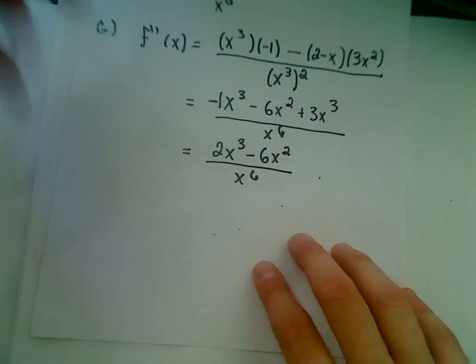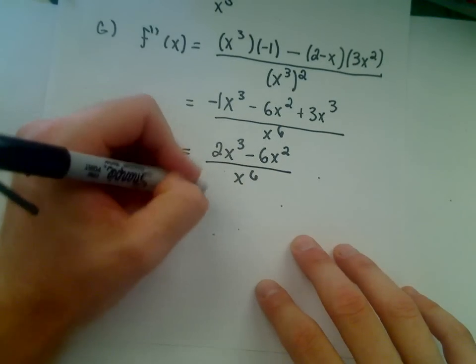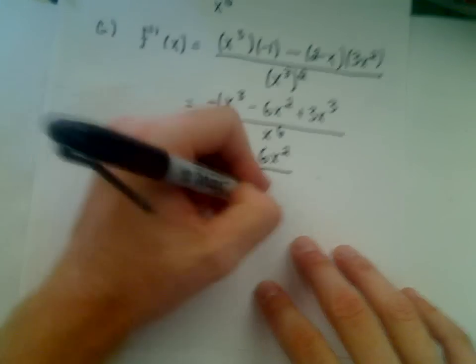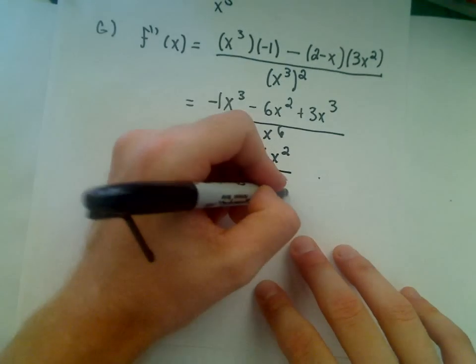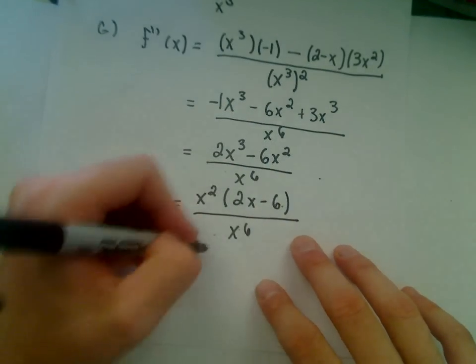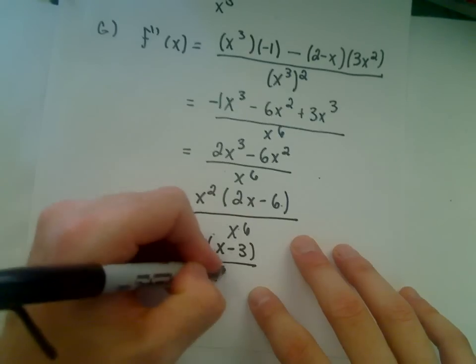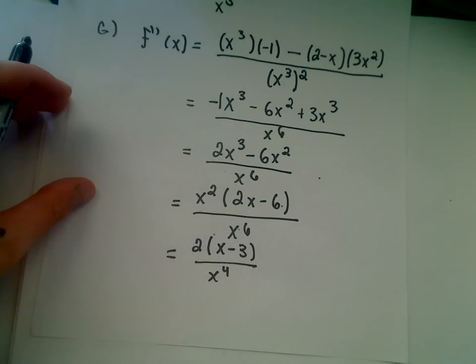Just like our last problem, we'll factor out anything we can from the top. Mainly, I'm going to factor out an x squared. It looks like we'll be left with 2x minus 6 over x to the 6th. And this will simply give us, we can even factor the 2 out, and then be left with x to the 4th. Okay, so that's what I got here for my second derivative.